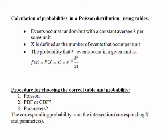When deciding which table to use, first we need to confirm it is indeed a Poisson distribution. Then we need to look at whether it is a PDF — which we use if we want the probability of exactly some number of events occurring — or a CDF, which we use if we want the probability of the number of events occurring being in some range. Then we identify parameters, and with the Poisson distribution, lambda is the parameter. We then use the table to find the corresponding probability.